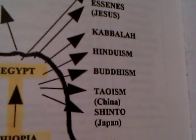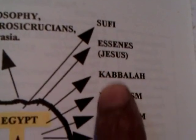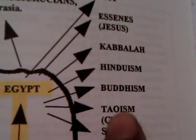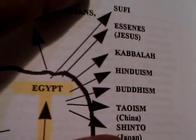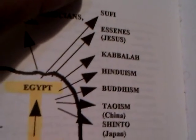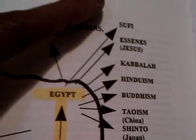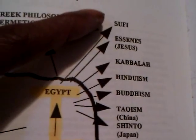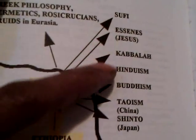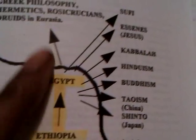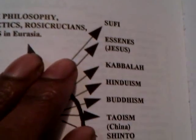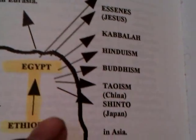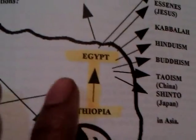Let's count these for a moment. We have 1, 2, 3, 4, 5, 6, 7. Isn't it interesting? When we read in Revelation about the seven stars and those seven candlesticks — this is the illumination, the religious illumination of these particular ancient cultures right here.